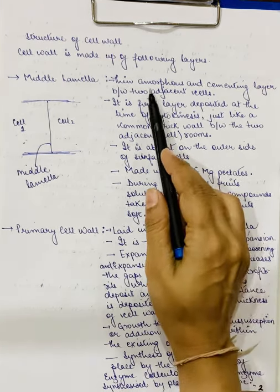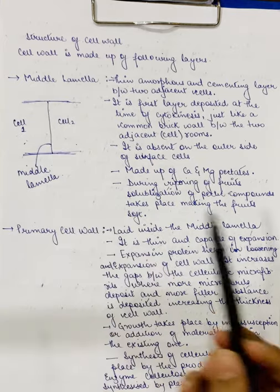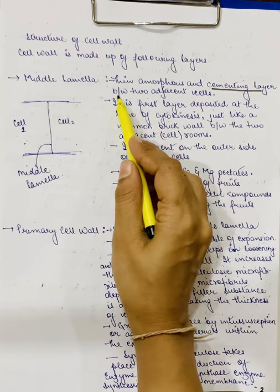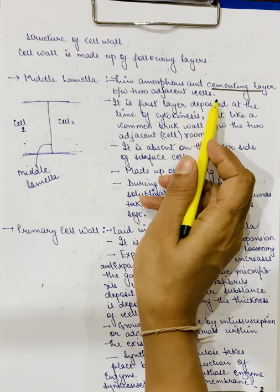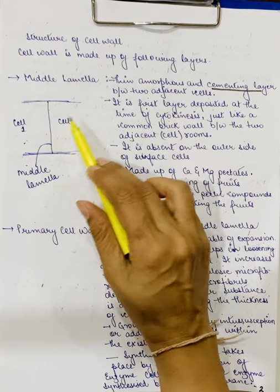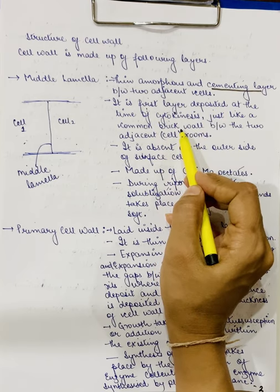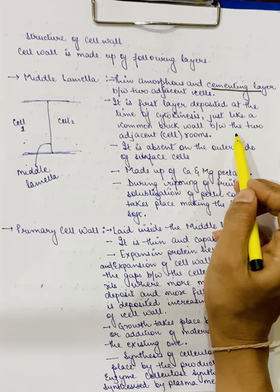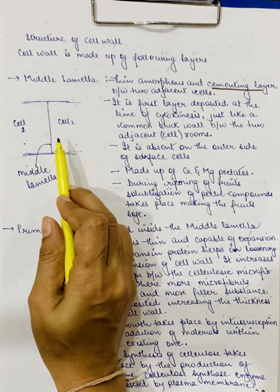The middle lamella is a thin, amorphous and cementing layer. We call it a cementing layer because it is binding these two cells together. It is present between two adjacent cells. Whenever the plant cells are dividing — whenever there is cytokinesis — the first layer which is deposited, just like a common brick wall between two adjacent rooms, is the middle lamella. So, the first cell wall formed at the time of cell division is the middle lamella.